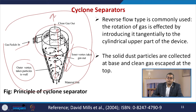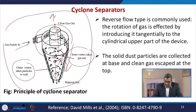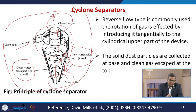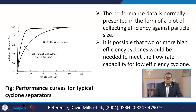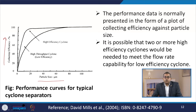In this type of separator, the reverse flow type is commonly used. The rotation of gas is effected by introducing it tangentially to the cylindrical upper part of the device. The solid dust particles are collected at the base and the clean gas exits at the top. Performance data is normally presented as a plot of collecting efficiency against particle size. It is possible that two or more high efficiency cyclones would be needed to meet the flow rate comparable to a single low efficiency cyclone.